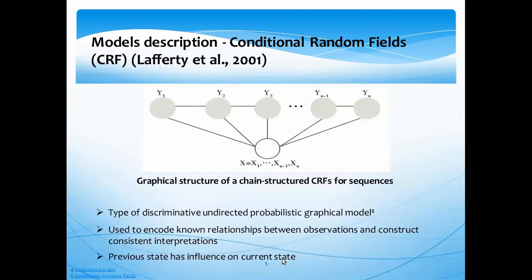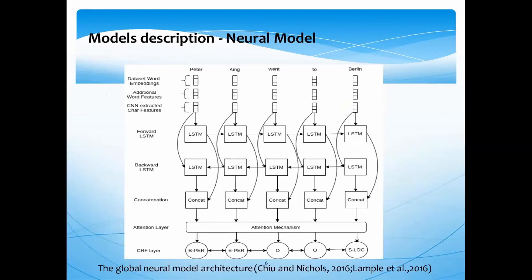Here is the first model as baseline, provided by the Hipe team. This is our global neural model architecture, where we use as input our dataset word embeddings, augmented by contextualized word embeddings provided by the Hipe team. We add some additional word embeddings, and all of these are connected to CNN-extracted character features extracted from each word using a CNN model.